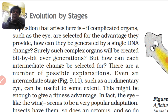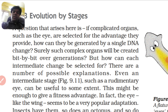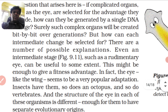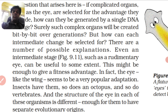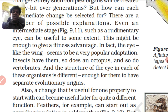There are a number of possible explanations. Even an intermediate stage, such as a rudimentary eye, can be useful to some extent. This might be enough to give a fitness advantage. In fact, the eye — like the wing — seems to be a very popular adaptation. Insects have them, so does an octopus, and so do vertebrates. The structure of the eye in each of these organisms is different enough for them to have separate evolutionary origins.